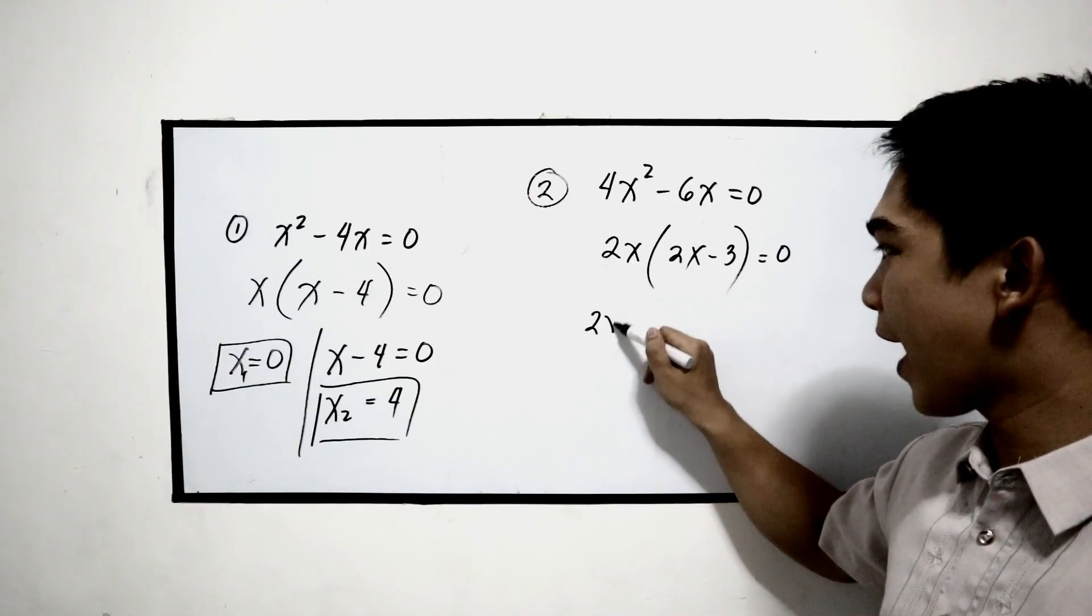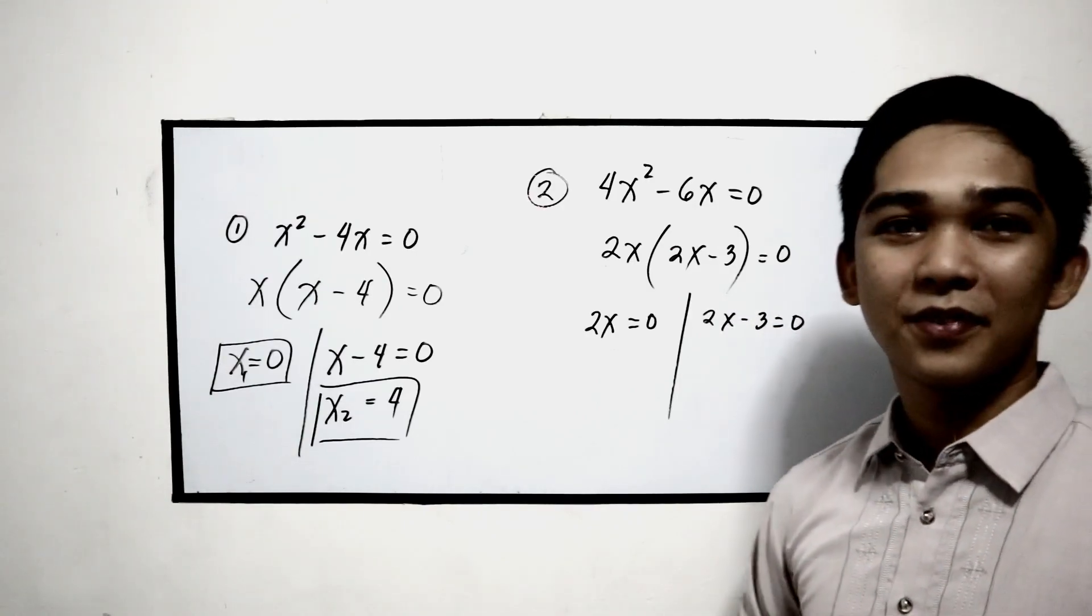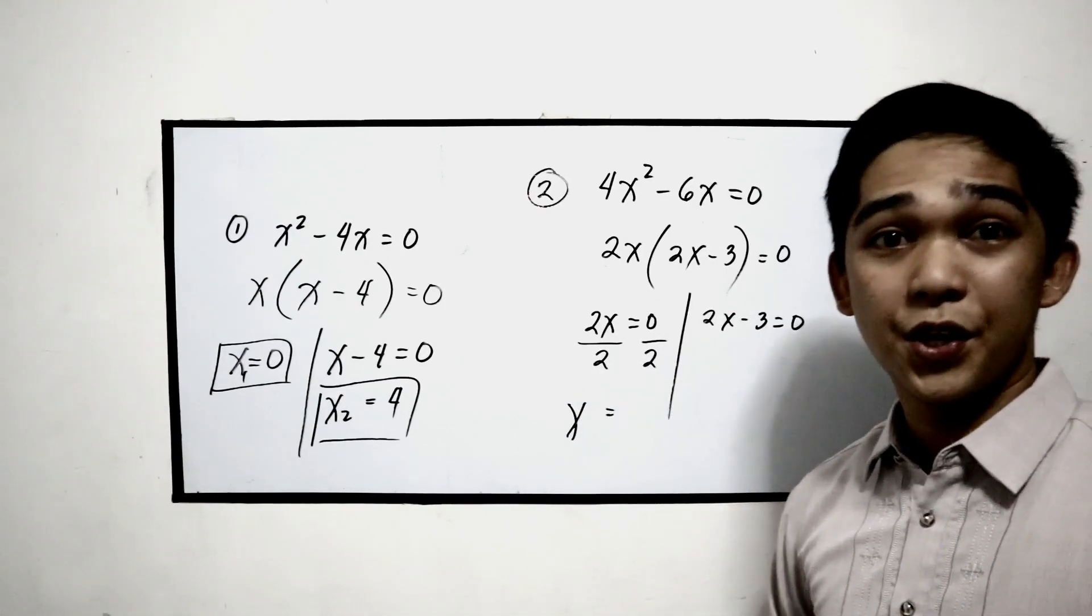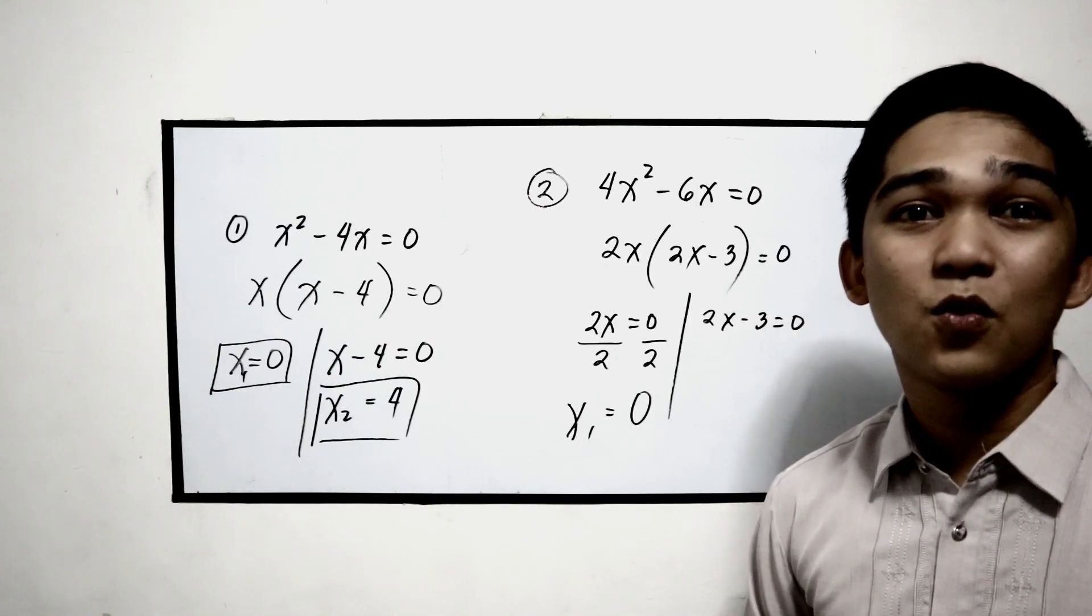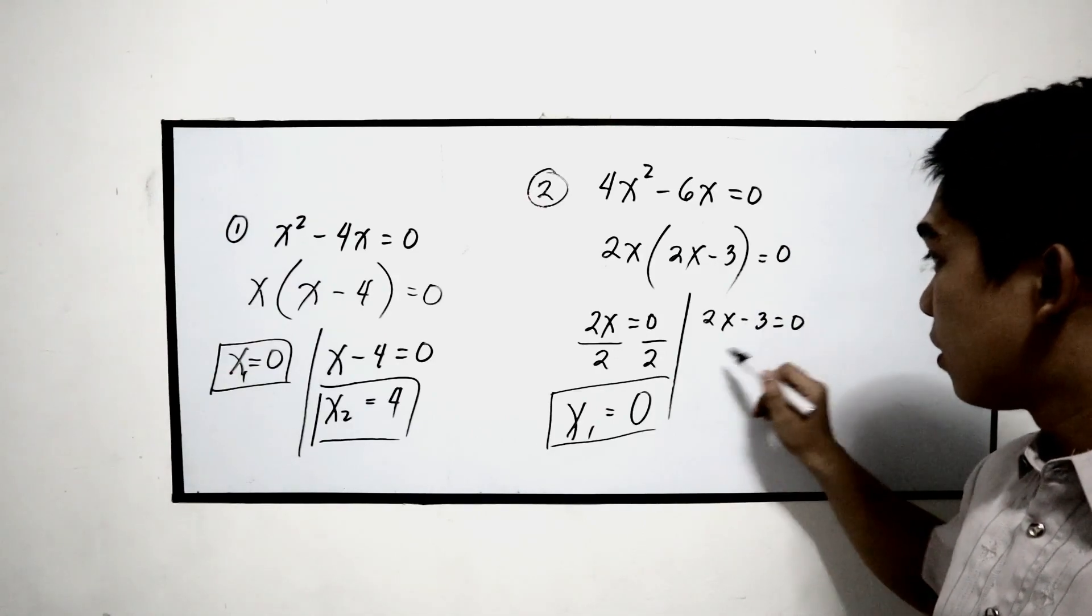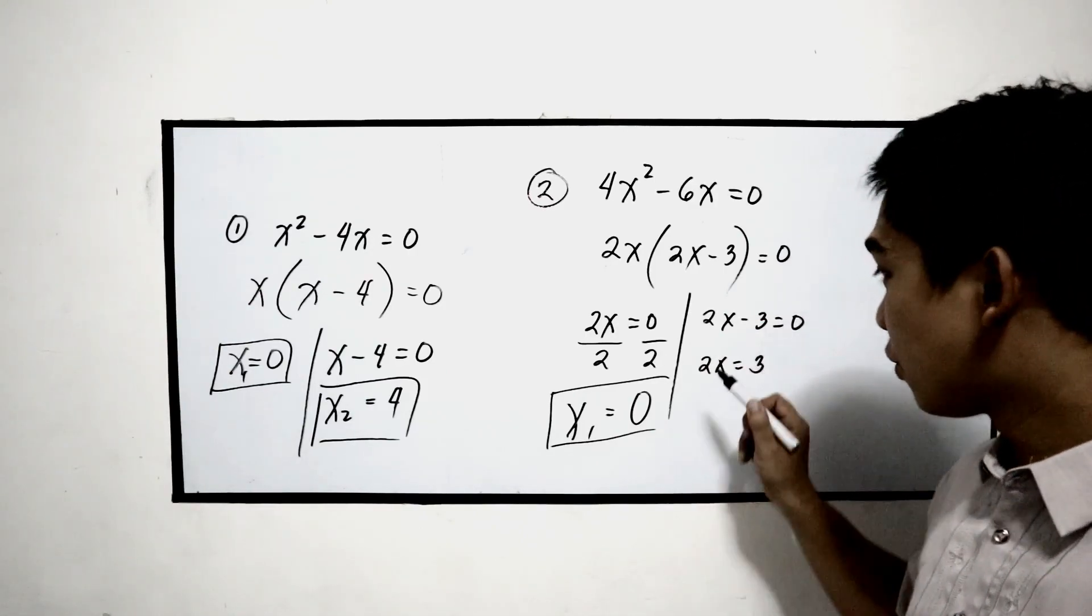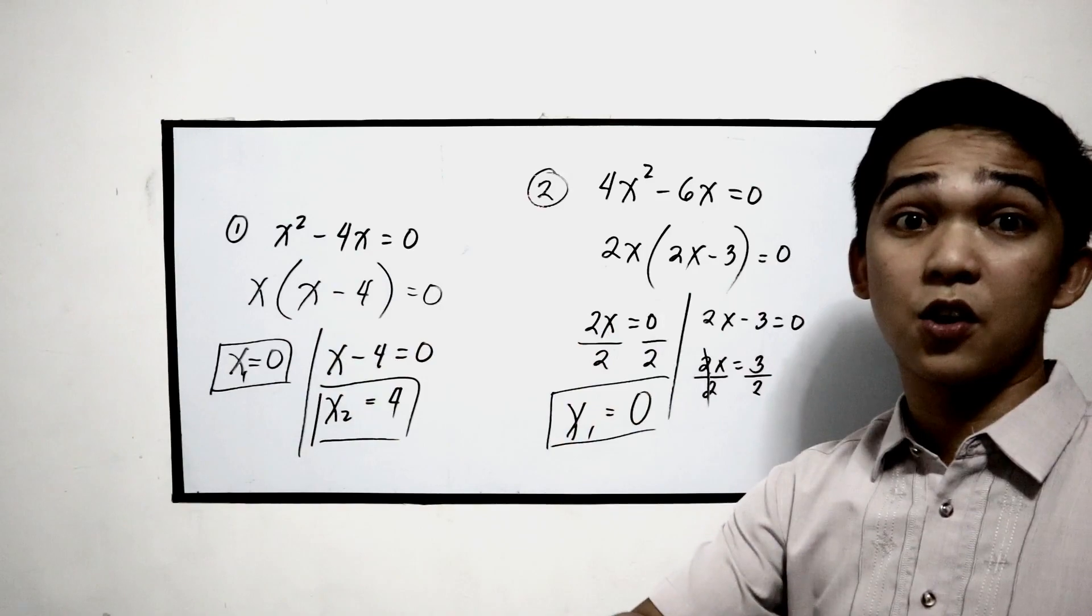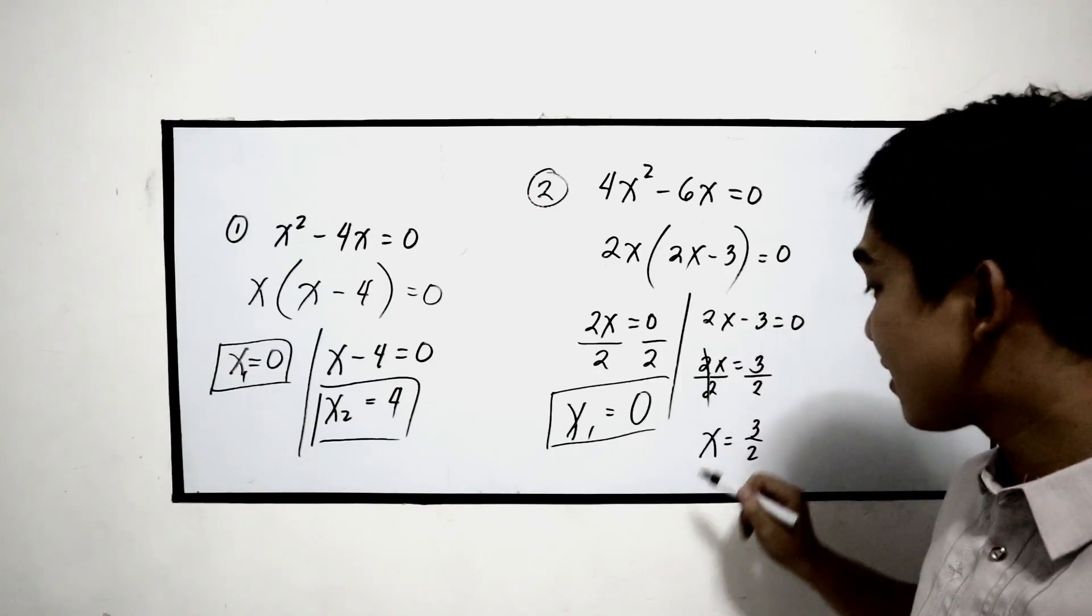Equate to 0. 2x equals 0, and the other factor is 2x minus 3 equals 0. To find x, divide by 2. So x equals 0 divided by 2, that is 0. We can name this as x sub 1. Next, 2x transpose negative 3 will become positive 3. To find x, divide both equations by 2, the left side of the equation and the right side of the equation. So x equals 3 over 2. We can name that as x sub 2.